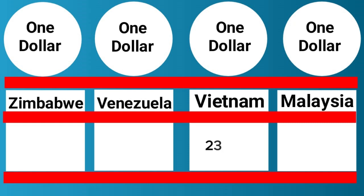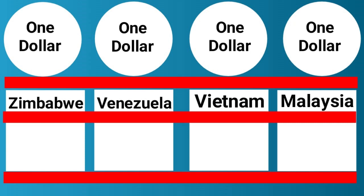And 1 US dollar is equal to 23,220 Vietnamese dong. And 1 US dollar is equal to 4.60 Malaysian ringgit.